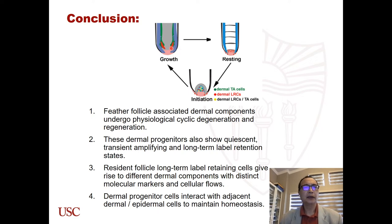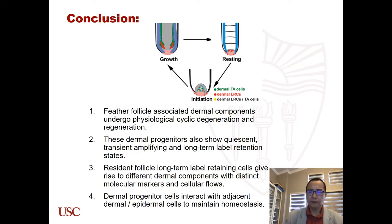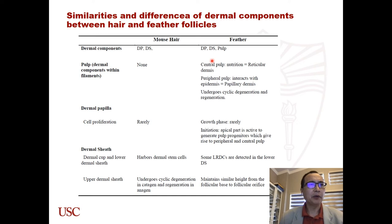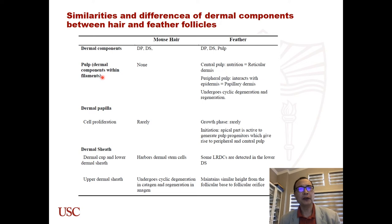In conclusion, there is a transit-amplifying cell zone and an LRC zone in the feather follicle. These LRC zones accumulate in the resting-phase apical dermal papilla and contribute to new pulp regeneration. Here is a summary of the similarities and differences of dermal components between hair and feather follicles. Feather has the pulp, which is a dermal component within the feather filament, and feather dermal cycling happens more in the pulp and in the apical dermal papilla.